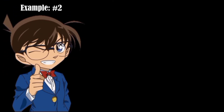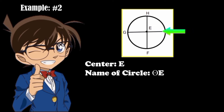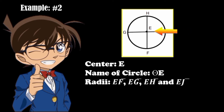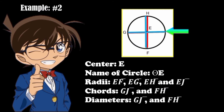Example number two. Now look at the illustration. Let's identify the parts of the circle. Our center is point E, so the name of the circle is Circle E. We have four radii: line segment EF, line segment EG, line segment EH, and line segment EJ. We have two chords: line segment GJ and line segment FH. We also have two diameters: line segment GJ and line segment FH. As you can see, chords and diameters are the same because in our given example, the chords pass through the center. Therefore, this is also a diameter.